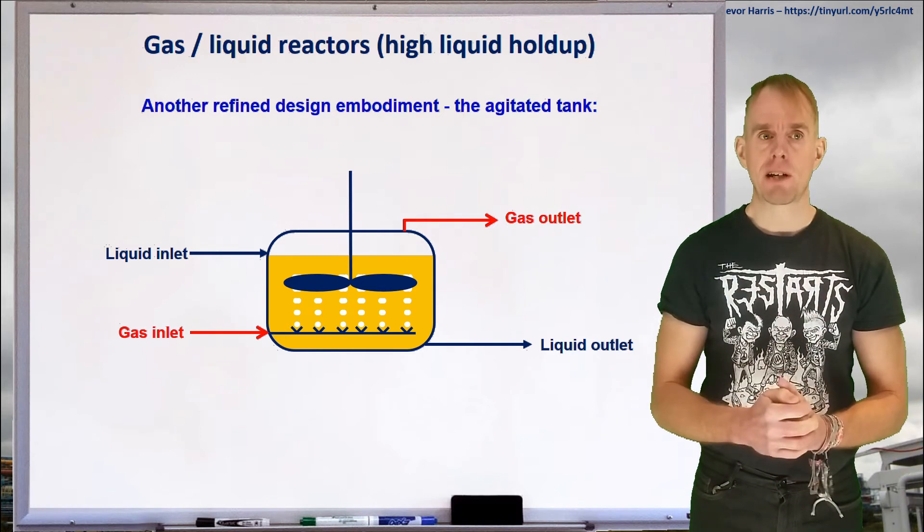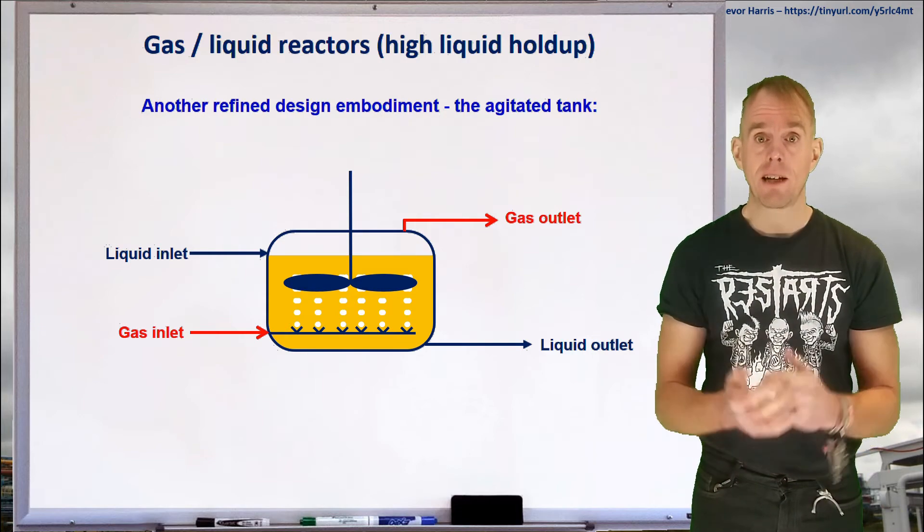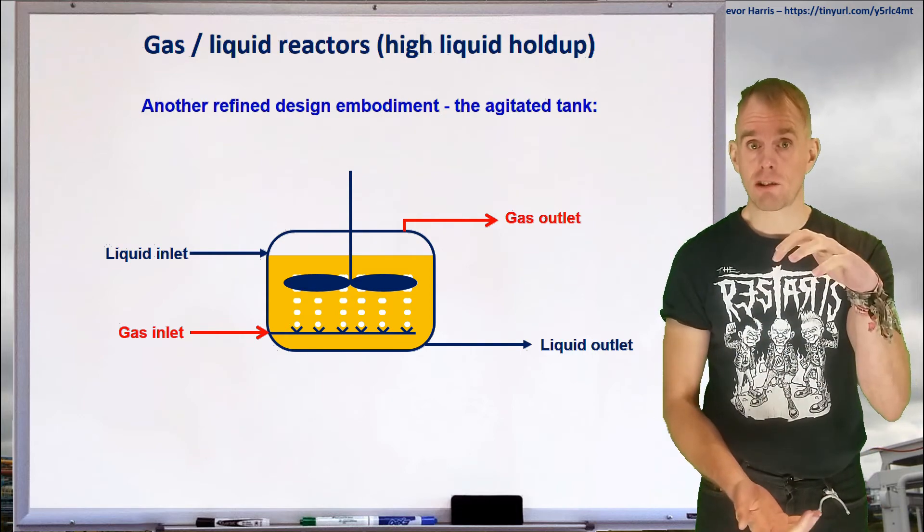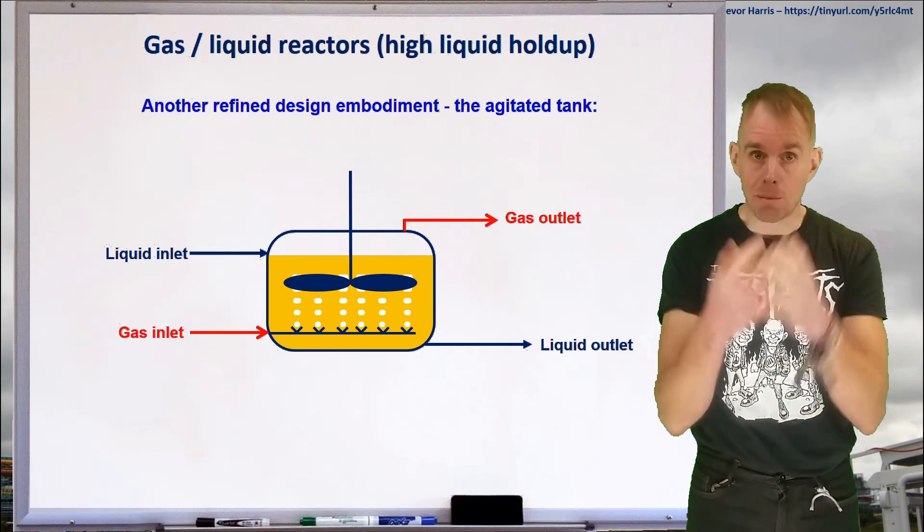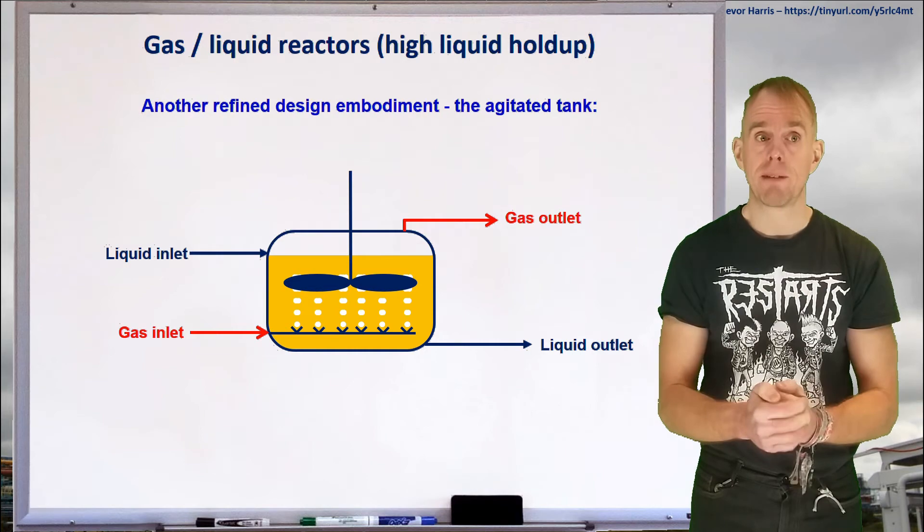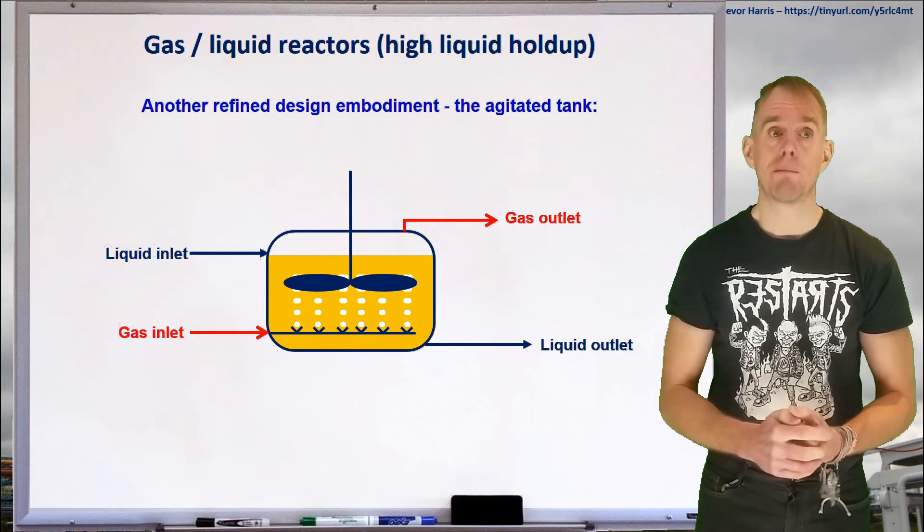Remember the deep shaft process where we introduced circulation patterns by just having a geometry of a reaction system that would allow sufficient static heads and density differences to develop and get a natural circulation pattern going, hence avoiding any need to have mechanical seals for rotational equipment.